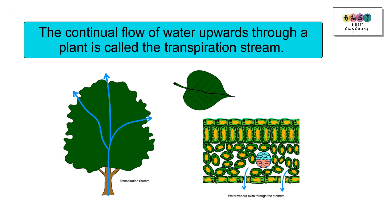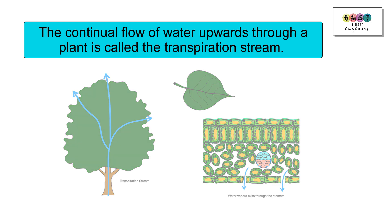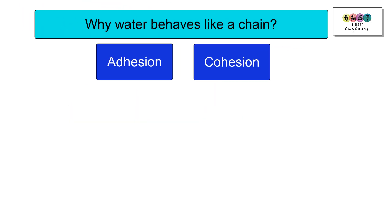It's out through the stomata that water vapor will evaporate out into the atmosphere. Because of transpiration, there is this continual flow of water upwards through the plant. This is known as the transpiration stream, and this is possible because water is behaving like a column or a chain.